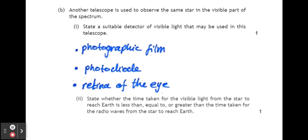And finally, state whether the time taken for the visible light from the star to reach Earth is less than, equal to, or greater than the time taken for the radio waves from the star to reach Earth. Well, as we said earlier in the question, radio waves are part of the electromagnetic spectrum, which travel at the speed of light. So radio waves and visible light travel at the same speed, so they will take the same length of time to reach the Earth.